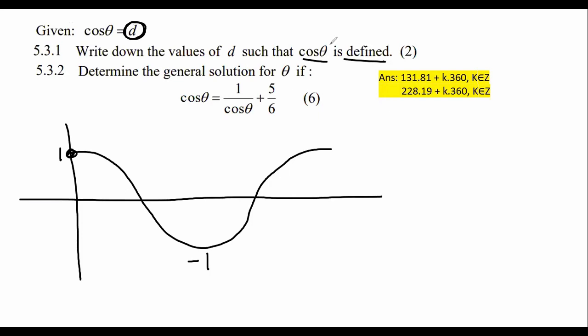They can be anything between minus one and positive one. Then it will be defined. If you say that d is equal to two, then two would be over here and it is undefined. It does not exist there. So where is it defined? It is defined whenever y is between minus one and one.